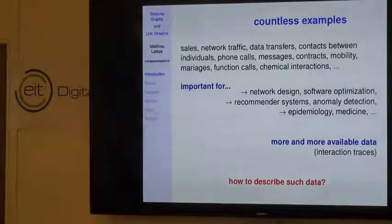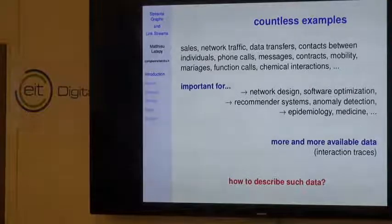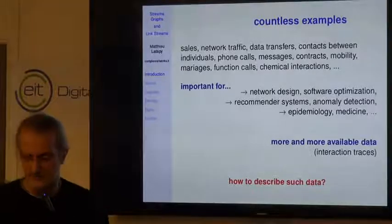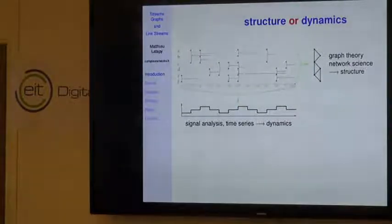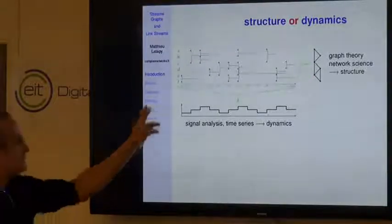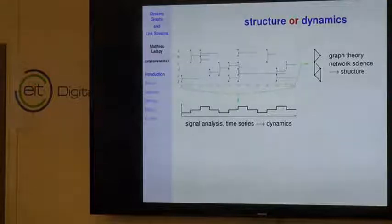For instance, when I give you a large graph with millions of nodes and links and ask you to describe it, you can compute its density, clusters, clustering coefficient, degree distributions, et cetera—you have a wide set of concepts that make it possible to describe a graph. We want to do the same thing with interaction streams. Until recently, you basically had two choices: forget about the dynamics and aggregate all interactions into a graph, or forget about the structure and just look at the number of interactions per time unit.